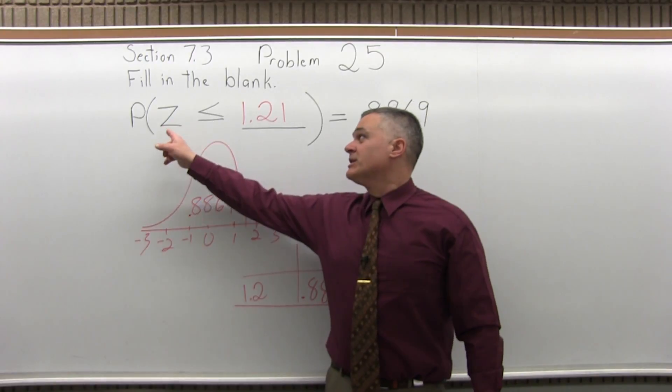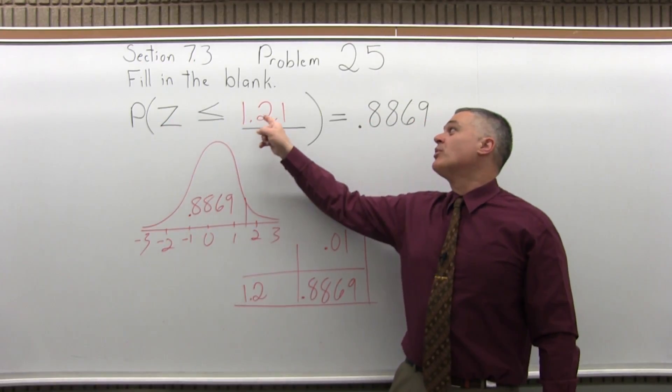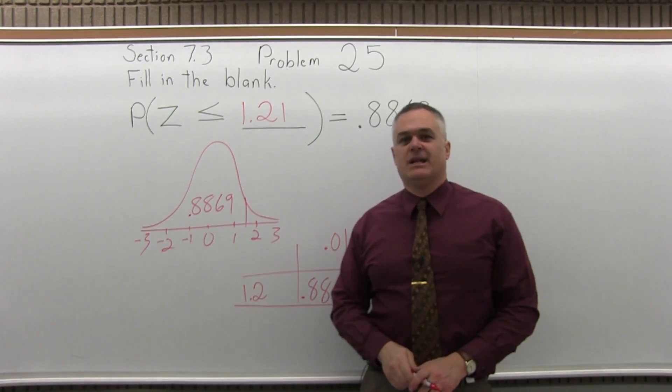So the final answer: the probability that z is less than or equal to 1.21 is equal to .8869.